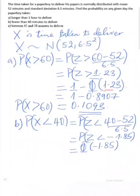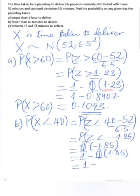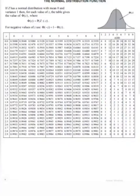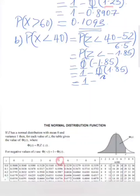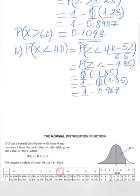Φ(−1.85) is the area to the left of the negative value, which by symmetry equals the area to the right of positive 1.85. That area is 1 − Φ(1.85). From the table, locating 1.8 on the first column and 5 on the top row, we get Φ(1.85) = 0.9678. So P(X < 40) = 1 − 0.9678 = 0.0322.